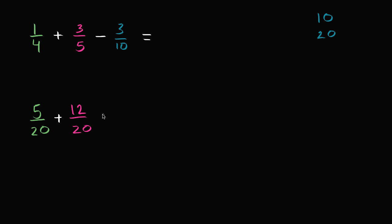And then we're going to subtract 3/10. But how do we write that as something over 20? Well, to go from 10 to 20, you multiply the denominator by 2. So if we want to have the same fraction, we need to multiply the numerator by 2 as well. So 3 times 2 is 6.